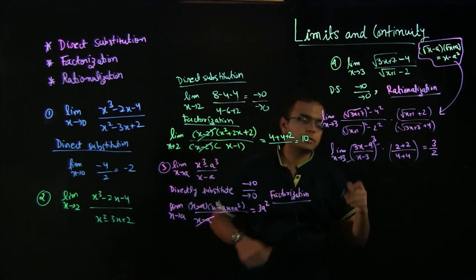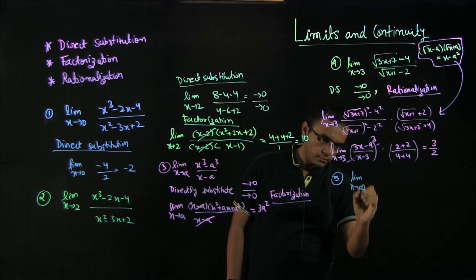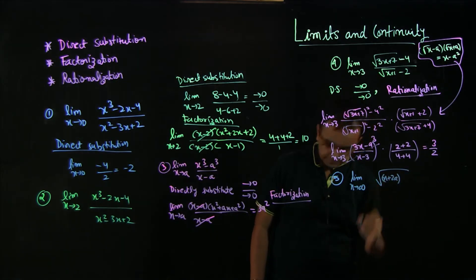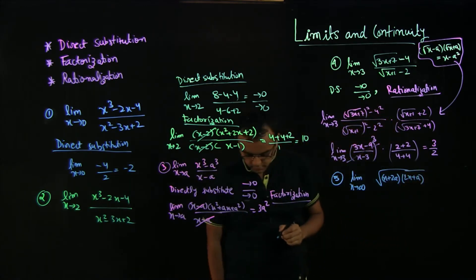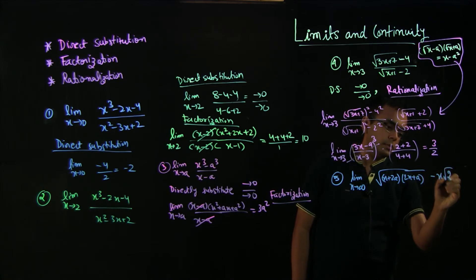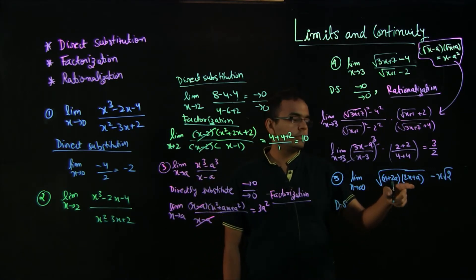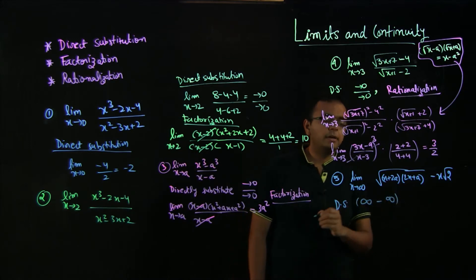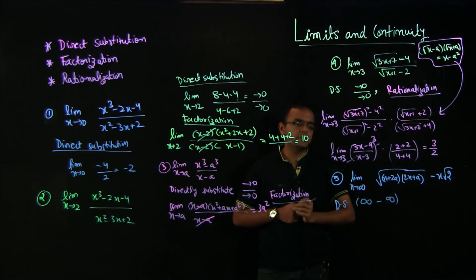Let us do the last problem: limit x tends to infinity of √((x + 2a)(2x + a)) minus x√2. If you do direct substitution you get √(infinity times infinity) minus infinity, which is infinity minus infinity — an indeterminate form. We cannot easily do direct factorization, but we do see a root-a minus root-b form, so we can use rationalization.